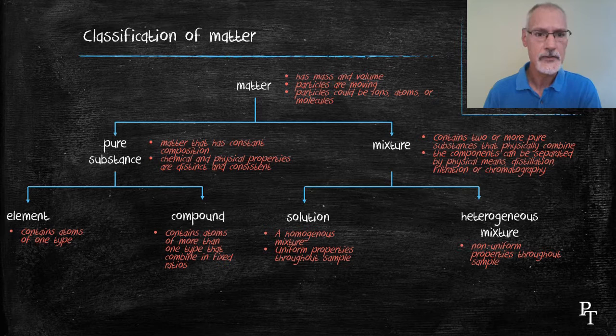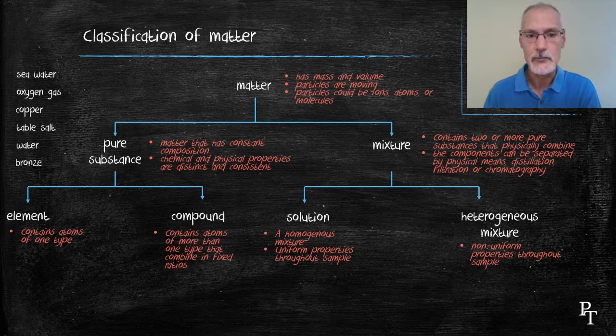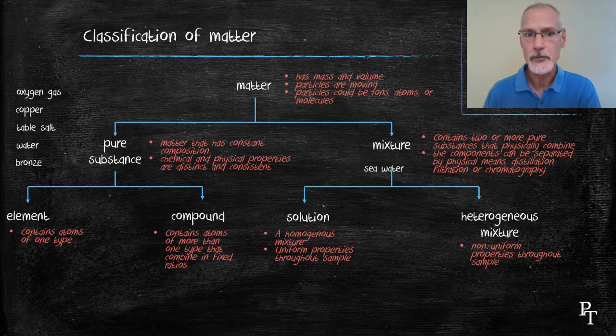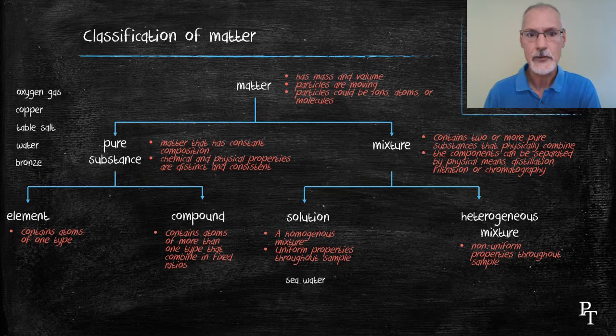To see that we understand these terms, let's take a look at a group of substances and see how you might classify them. Starting off with seawater. Seawater is a mixture of salts and water, hence it's a mixture, and it is relatively uniform throughout, hence we would put it in the solution category.